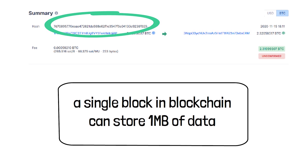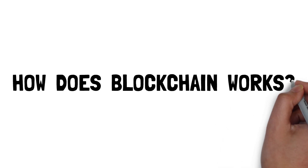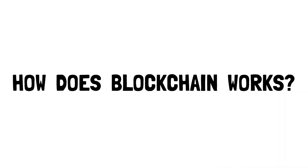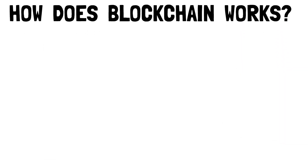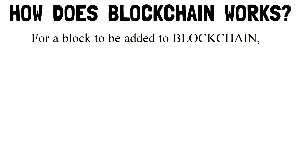So by now, you have understood that blockchain is based on transactions. But in reality, how does it actually work? So whenever a block stores new data, it is added to the blockchain. Blockchain, as its name suggests, consists of multiple blocks strung together. And in order for a block to be added to the blockchain, these four things must happen.